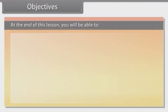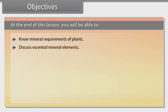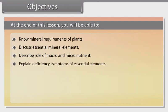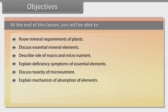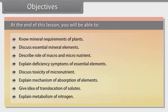Objectives. At the end of this lesson, you will be able to: know mineral requirements of plants, discuss essential mineral elements, describe the role of macro and micronutrients, explain deficiency symptoms of essential elements, discuss toxicity of micronutrients, explain the mechanism of absorption of elements, give an idea of translocation of solutes, and explain the metabolism of nitrogen.